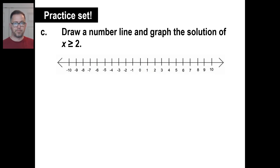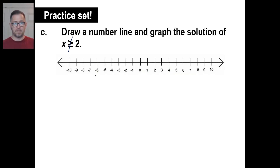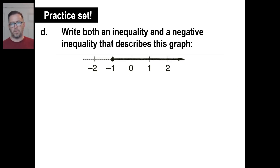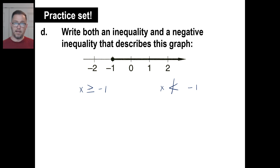Let's draw a number line. It should have a not sign through it. If we know that X is not greater than or equal to 2, that means X is less than 2. So you go — boom — 2, less than 2, open circle. Don't try to make it perfect. Get it done and go to the next problem. So X is greater than or equal to negative 1 for the regular inequality. The negated inequality means X is not less than negative 1.